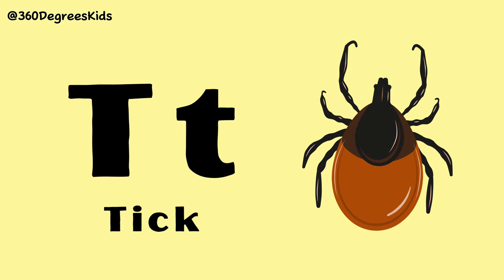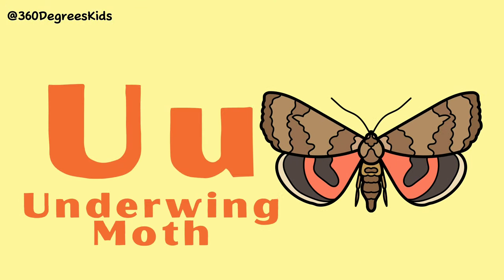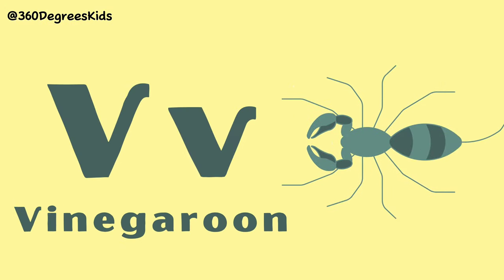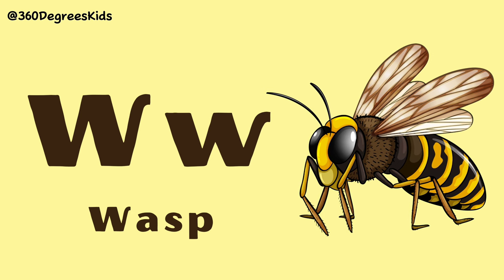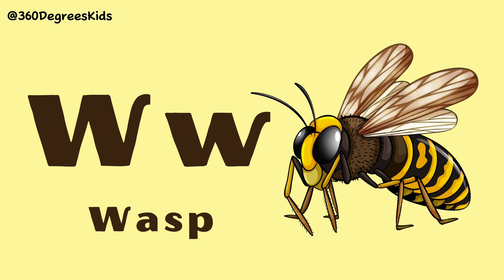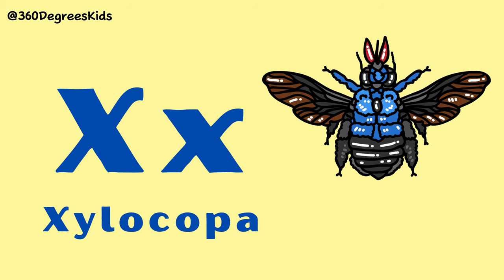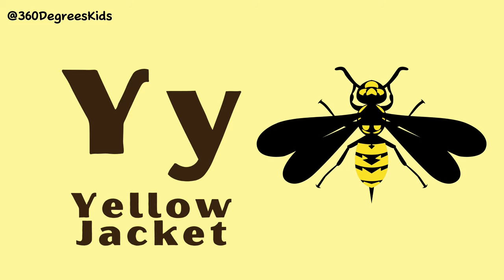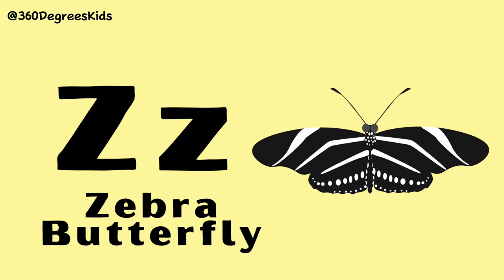T for Tick. U for Underwing Moth. V for Vinegaroon. W for Wasp. X for Xylocopa. Y for Yellow Jacket. Z for Zebra Butterfly.